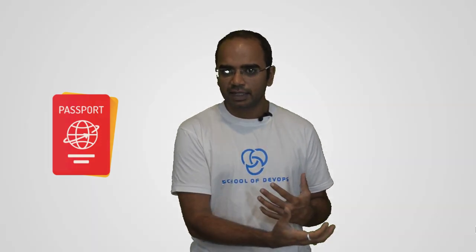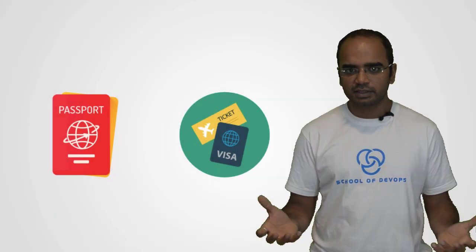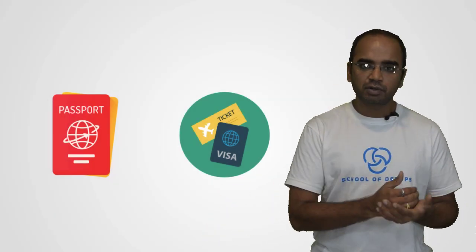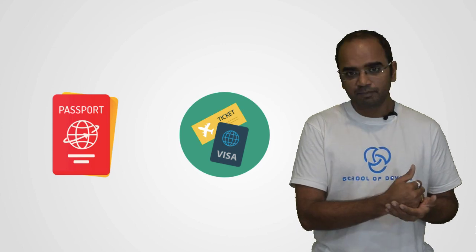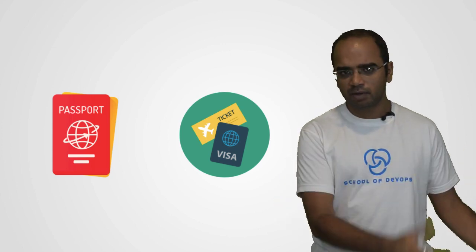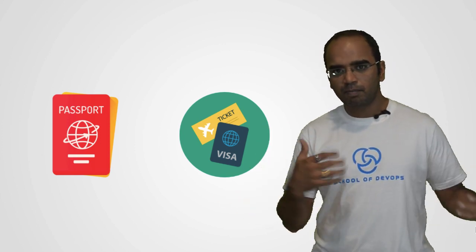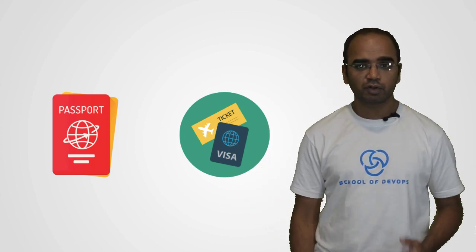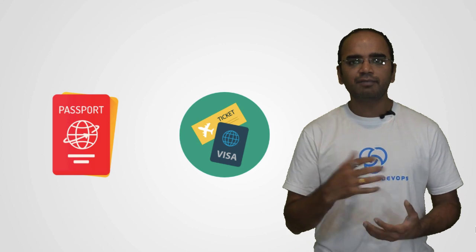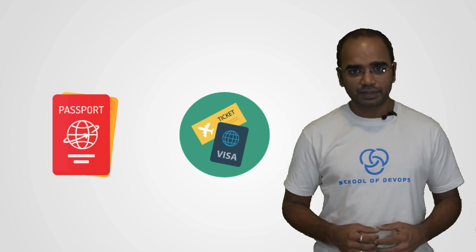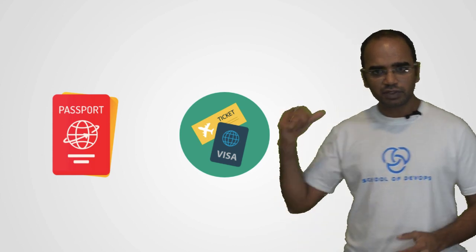You also need authorization, which is generally in the form of a visa. That's what visas are for — they decide whether you are permitted or authorized to work there, or you can just go there as a tourist, or work there long term with work authorization. You need different types of authorizations for different purposes of your visit. That's your authorization — authorization is your visa document.